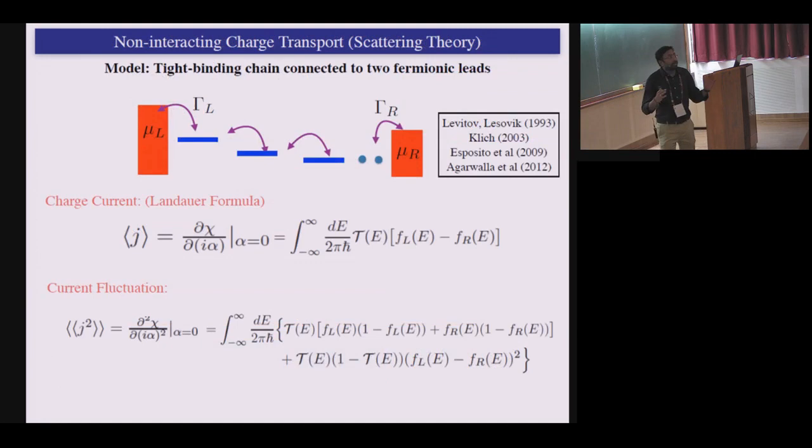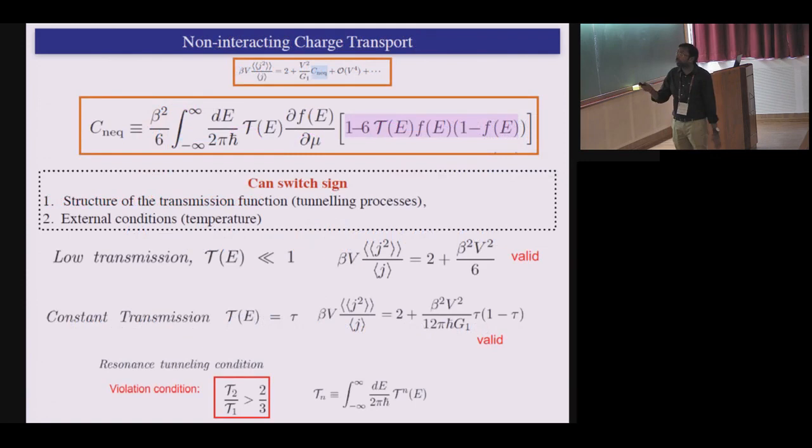So now the whole idea is to see what happens to this guy taking in some model system. So what we started doing was looking at simple non-interacting system, a charge transfer model. What you can have is, let's say a tight binding chain coupled to two baths at the two ends. And if it is non-interacting, you can immediately get this counting function, which generates all the moments for current, which is also famously known as Levitov-Lesovik formula. And we also derived at some point using this non-equilibrium Green's function formalism and basically match. Anyway, so once you have the generating function, you get the current as a fluctuation and all the moments. So current is a Landauer formula.